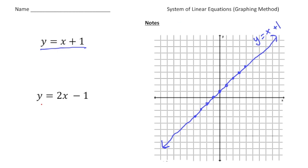Now let's use a different color to graph the second function, which is y equals 2x minus 1. This one is going to have a y-intercept at negative 1, and this time we're going to have a slope of 2, so a slightly steeper slope.